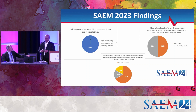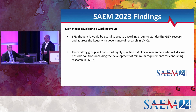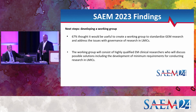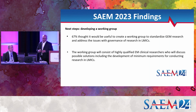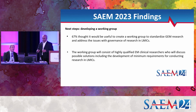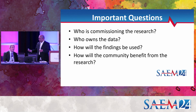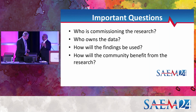The first step is to come up with a working group. There are challenges to creating one, which James will talk about. 67% of last year's respondents said they want a working group. The feedback was that it should consist of highly qualified EM clinical researchers who will discuss possible solutions. We did a deeper dive and came up with more specific questions.